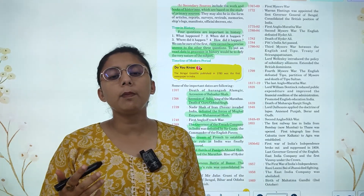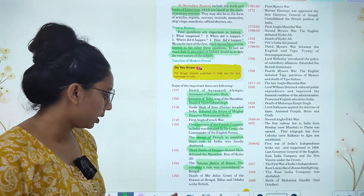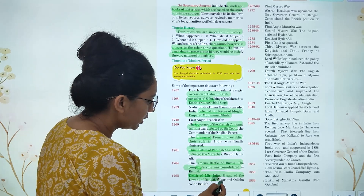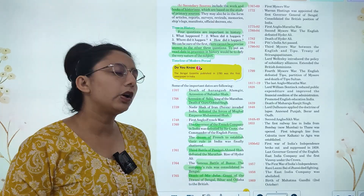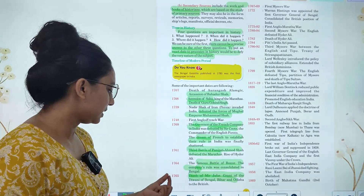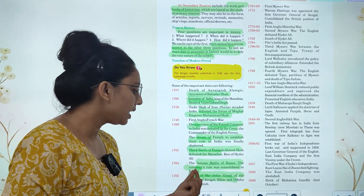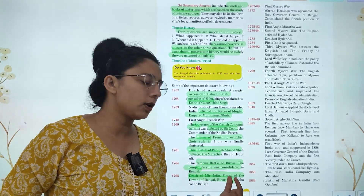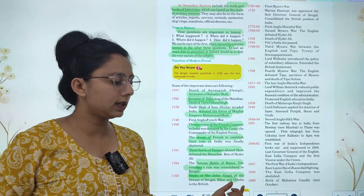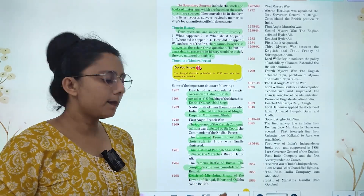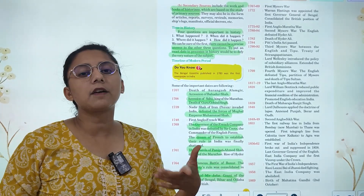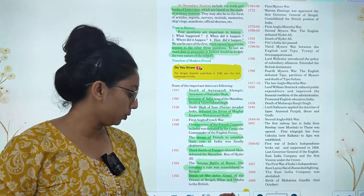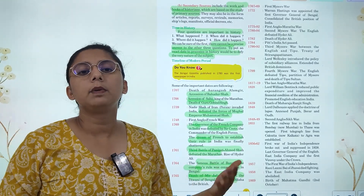The company's rule was consolidated in Bengal. In 1765, the Diwani of Bengal, Bihar, and Odisha was granted to the British East India Company.